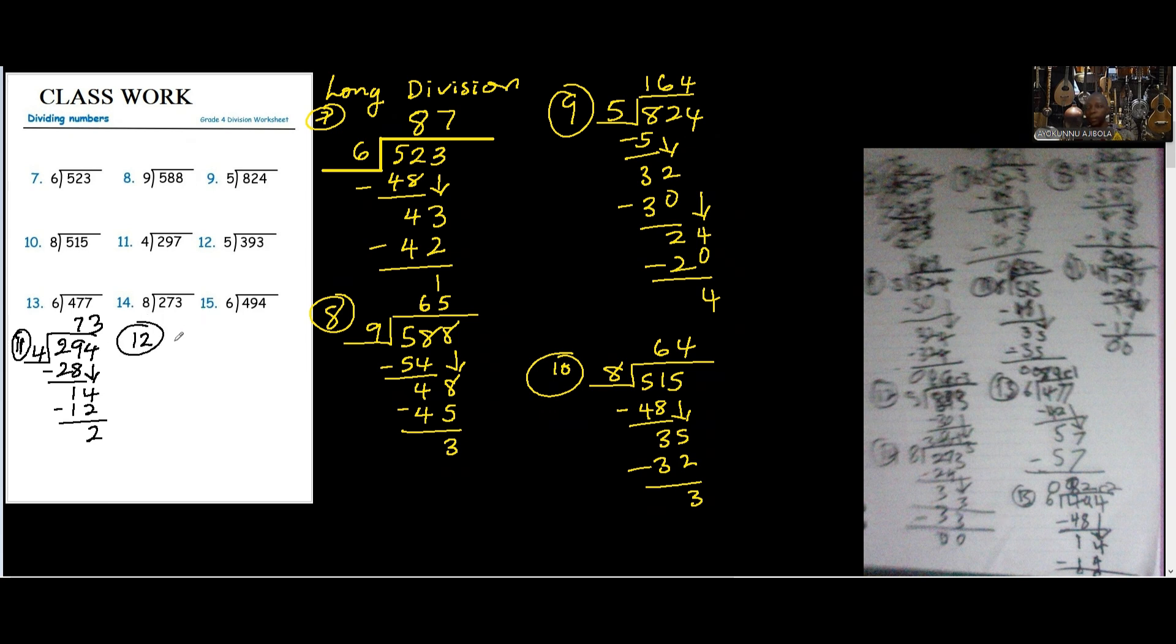So number 12. We have... Okay. We have 393. So... 5 can go in 3. Then 5 in 39. That is 7. 7 times 5 is 35. You subtract... Bring down 3. 5 in 43 is 8. 8 times 5 is 40. So when you subtract... You have 3. Answer remainder. So... Number... Which one is this? Which number... Wait. Where is the number one? Where is your number 7? Is it this one, right? Number 7. Yeah, that's number 7. Okay.